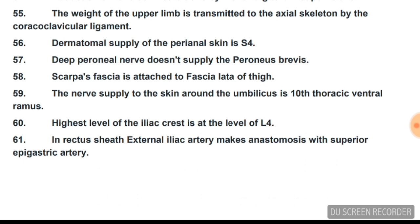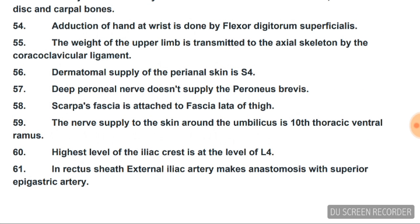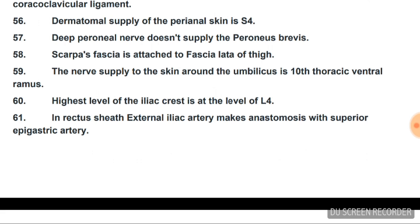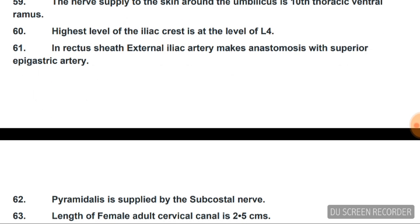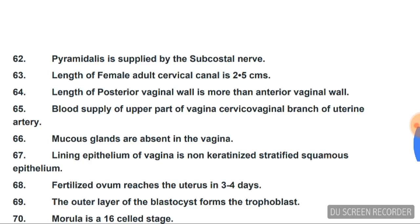Deep peroneal nerve does not supply peroneus brevis; it supplies peroneus longus. Scarpa's fascia is attached to the fascia lata of the thigh. Nerve supply to the skin around the umbilicus is the 10th thoracic ventral ramus. Highest level of the iliac crest is at L4. Inside the rectus sheath, external iliac artery anastomoses with the superior epigastric artery. Pyramidalis muscle is supplied by the subcostal nerve.